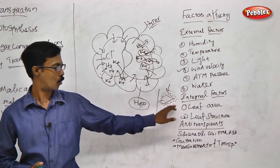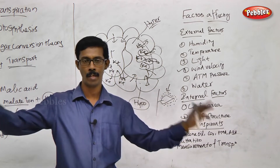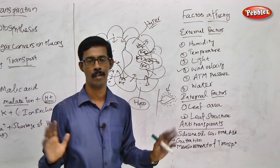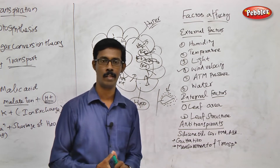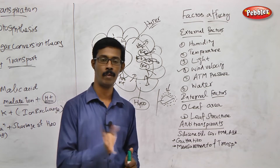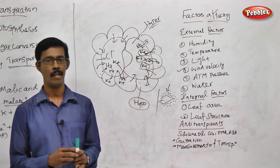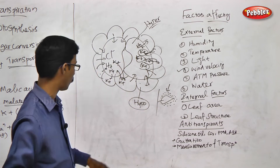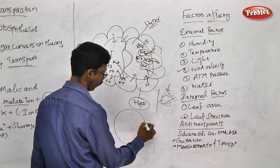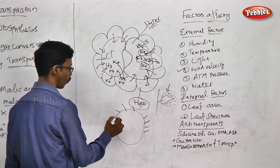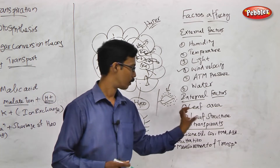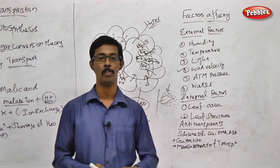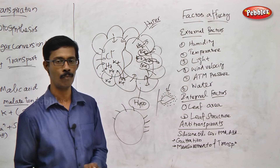Now, internal factors. The first internal factor is the surface area of the leaf. A leaf with a very wide surface area requires a lot of transpiration. In the desert, xerophytic plants have very thick leaves, reduced to spines — very small and pointed. If the surface area is reduced, the structure becomes very pinpointed. They are reducing transpiration to the maximum level. So leaf surface area and structure are key internal factors.